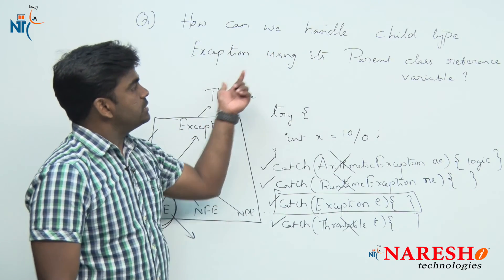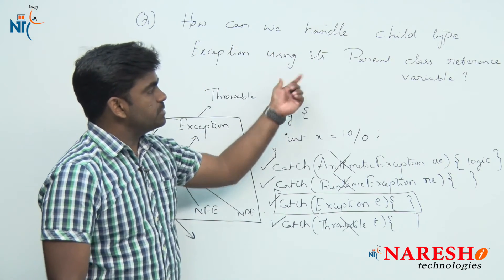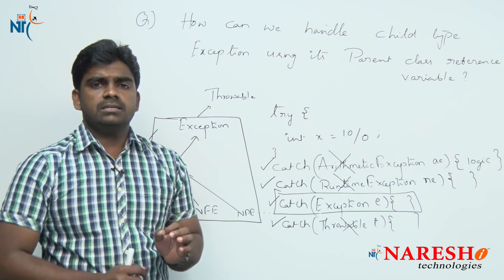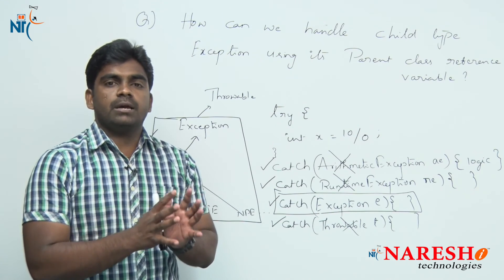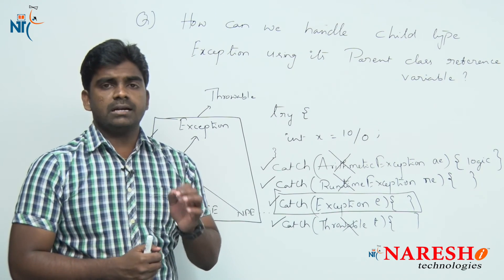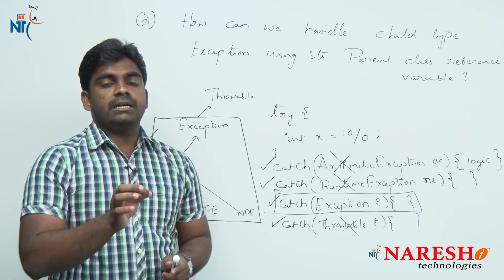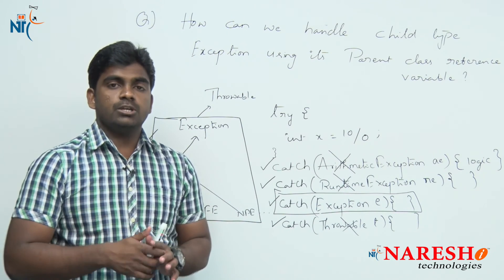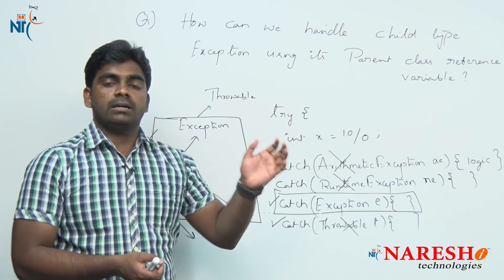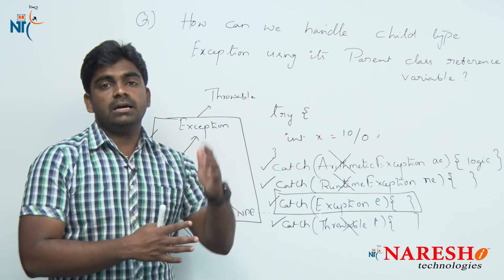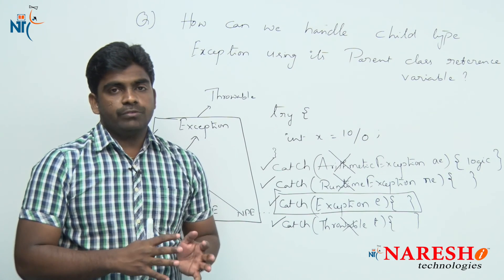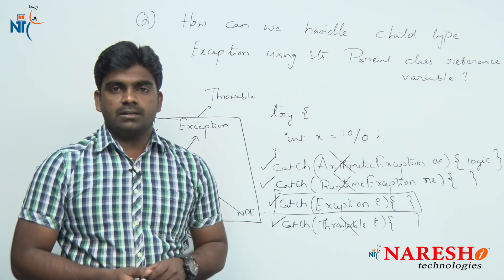This is how we can handle a child type exception using its parent type reference variable. The simple answer is: because of runtime polymorphism and runtime binding — after creating an object for the child class, you can store the address into its parent type, grandparent type, or any other type in the hierarchy. Hope you understood well. For more videos, please subscribe to the Naresh IT channel. Thank you.